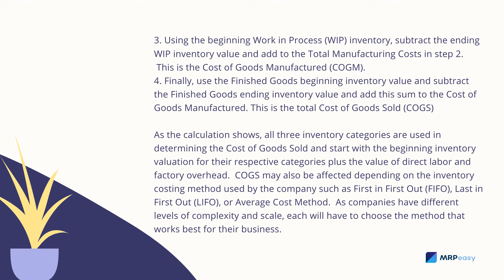Step 4: Finally, use the finished goods beginning inventory value and subtract the finished goods ending inventory value, and add this sum to the Cost of Goods Manufactured. Step 5: This is the total Cost of Goods Sold, COGS.